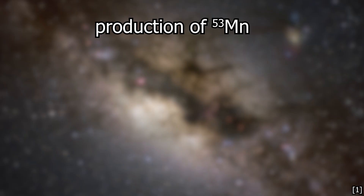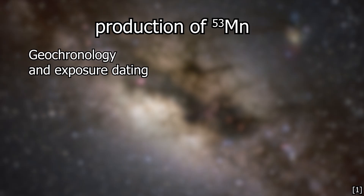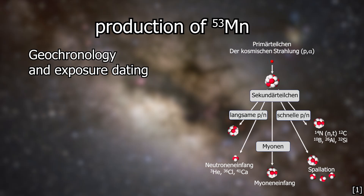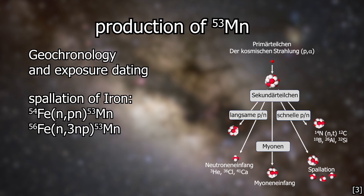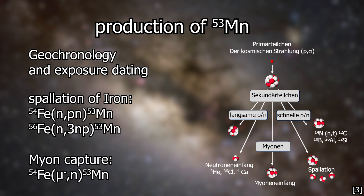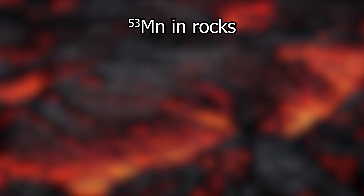So what do you need manganese 53 for? Geochronology. I've just spent the last weeks exploring the radionuclides of our geoscientists. Manganese 53 is a cosmogenic radionuclide — it is produced by spallation of iron. Spallations are nuclear reactions with high-energy particles, often protons as part of the cosmic primary radiation. So where there is iron, you can make use of manganese 53.